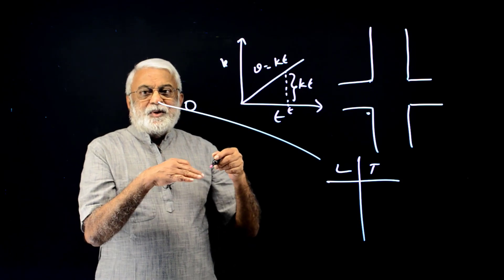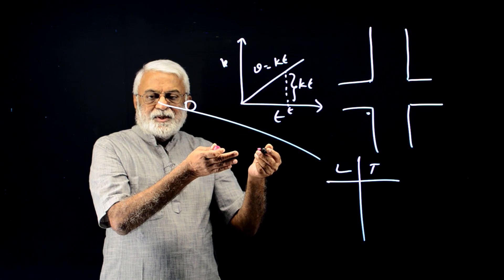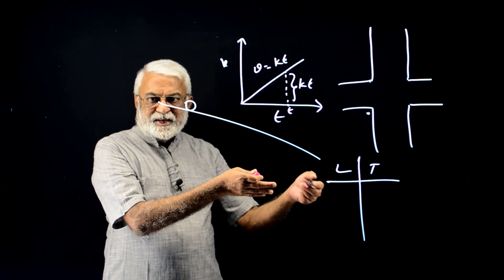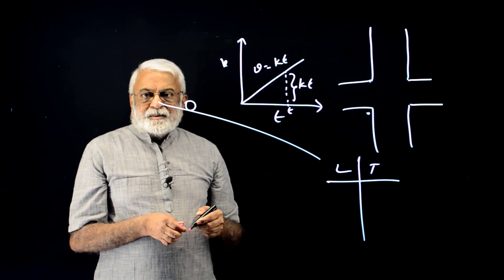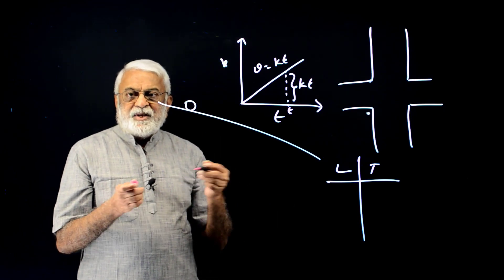So you guess. Follow the consequence of the guess. And if that is what is seen in nature, that's what can be tested by an experiment, then your guess must be right. And that's it. How do you learn laws of nature?